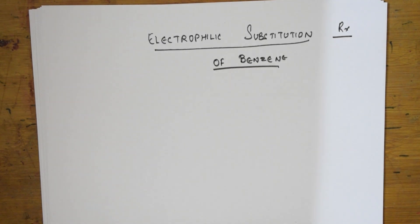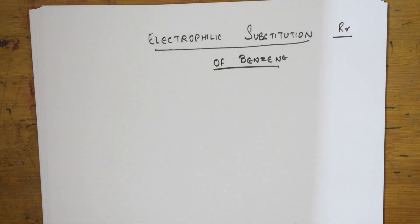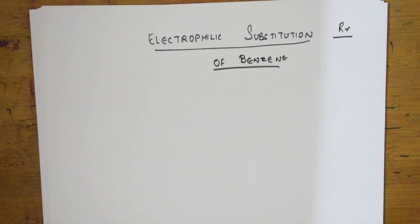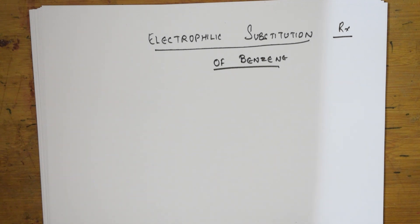Welcome back students to one more session on the chemical properties of benzene. We have come to the main concept, that is electrophilic substitution reactions of benzene. Before going into the electrophilic substitution reactions, let us see the mechanism of electrophilic substitution.